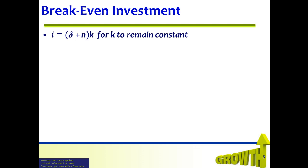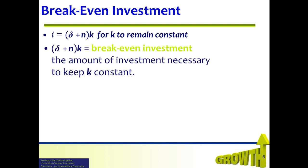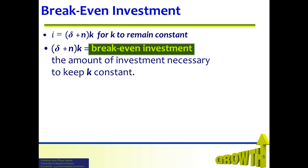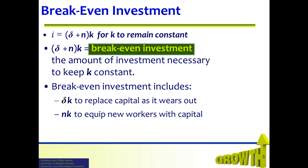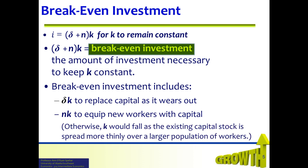If investment I equals (delta plus n) times k, then k will remain constant, because investment is what makes k grow and (delta plus n) is what makes k fall. We can think of (delta plus n) times k as break-even investment — the amount of investment necessary to keep k constant. Break-even investment includes delta times k to replace capital as it wears out, and nk to equip new workers with capital. Otherwise, k would fall as the existing capital stock is spread more thinly over a larger population of workers.